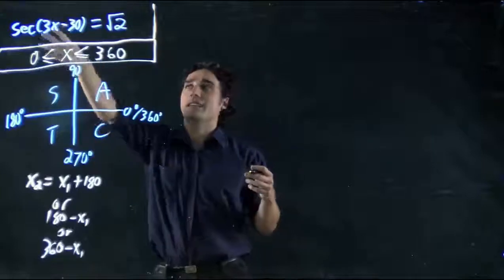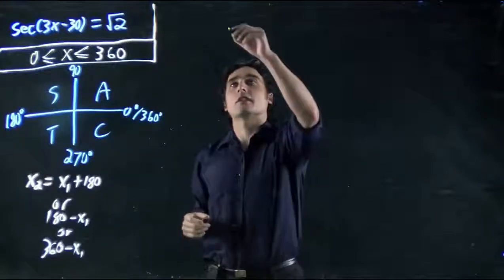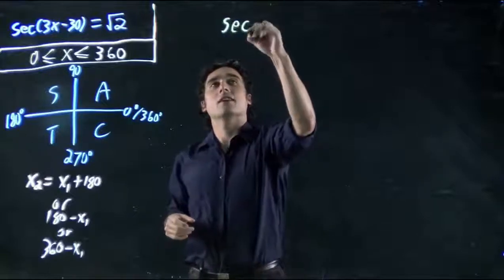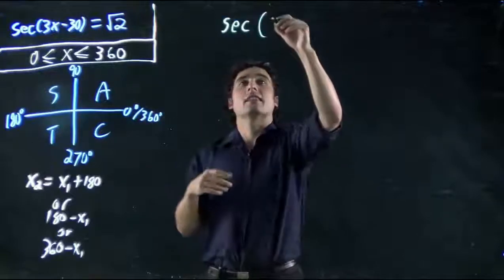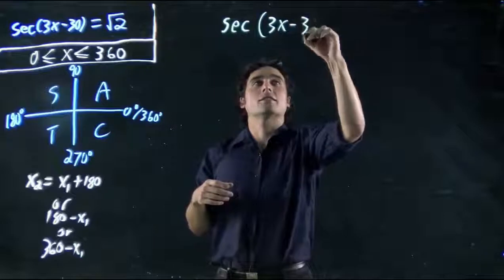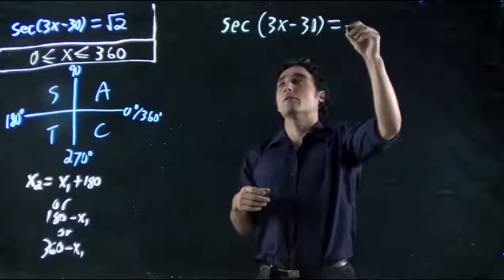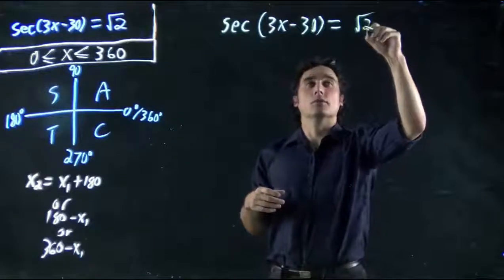So we can be given something like this, secant of 3x minus 30. Let's even write it out. So we have secant of, this is all in brackets, 3x minus 30, and that is equal to square root 2.